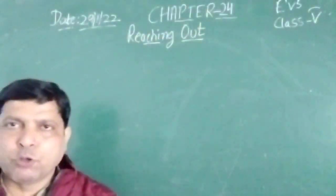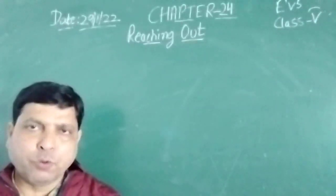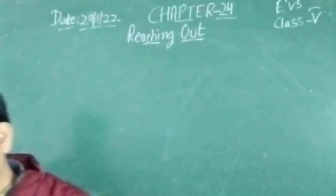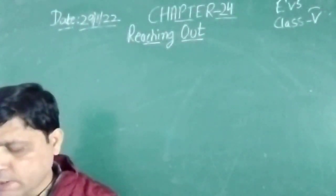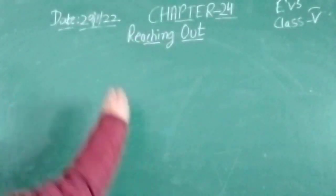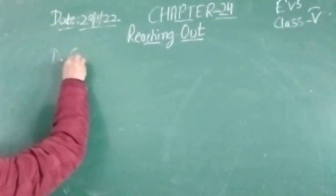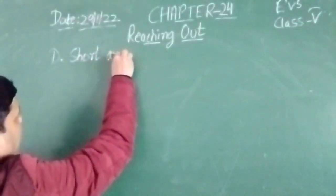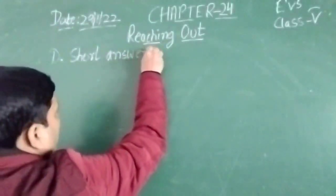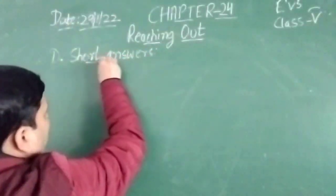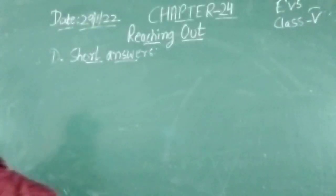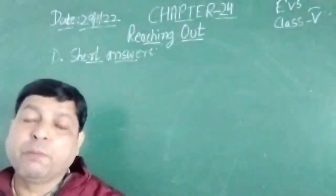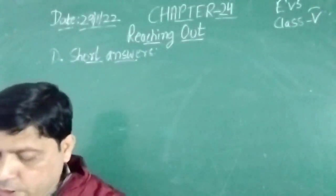Let's do a little recapitulation of what we have done in the previous video. In the previous video, students, we have completed the book exercise of the chapter. We are doing question number B, short answer. We have already completed the first two questions: what are smartphones, and what do you mean by global connectivity? We have completed this.